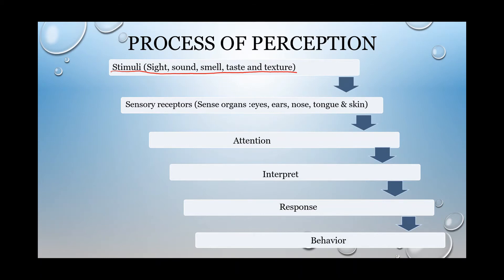Stimuli may be sight, sound, smell, taste, or texture. If a sound comes, you try to react to that; if a smell comes, you try to react to that. These stimuli will be received by the sensory receptor — for example, the sense organs.